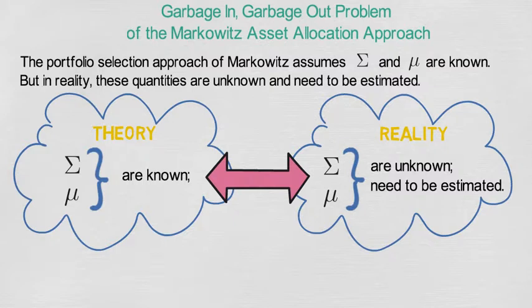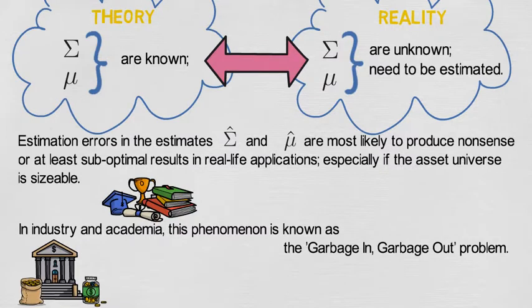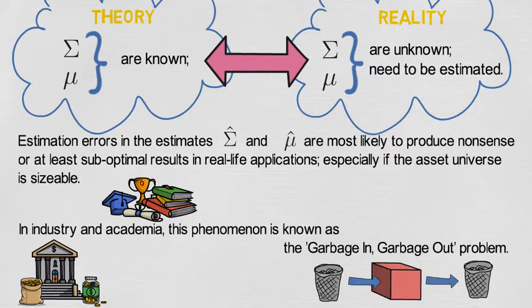That means that you will have estimation errors in your empirical estimates sigma hat and mu hat. Most likely these estimation errors produce nonsense or at least suboptimal results in real-life applications. And the problem gets worse as the asset universe that you consider is growing. In industry and academia that phenomenon is known as the garbage-in garbage-out problem.